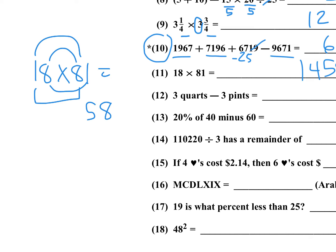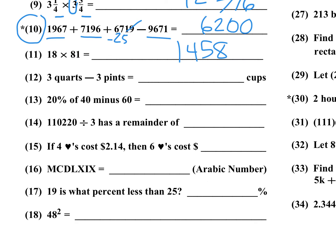Number 12: you have 3 quarts minus 3 pints and you want the answer in cups. You need to know that two cups is a pint and two pints is a quart. What I'm going to do here is I'm going to factor out the 3 because I have 3 here and 3 there. So one quart minus a pint is one pint, and one pint is equal to two cups, so two times 3 would give you 6 cups. Number 13: 20% of 40 is 8. The zeros cancel with the percent, so 2 times 4 is 8. 8 minus 60 is negative 52.